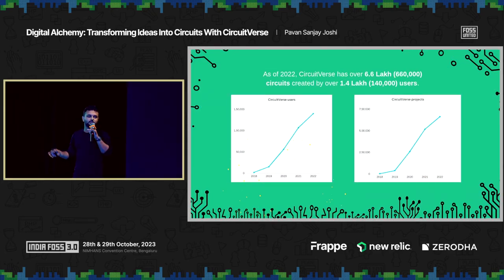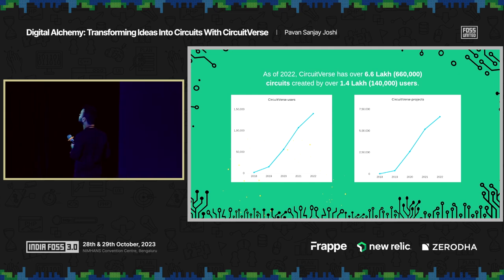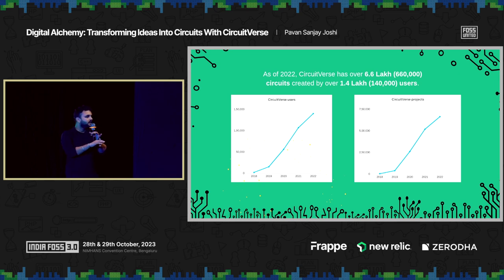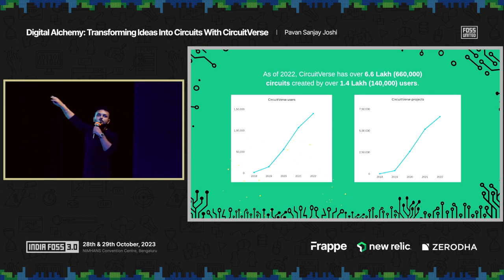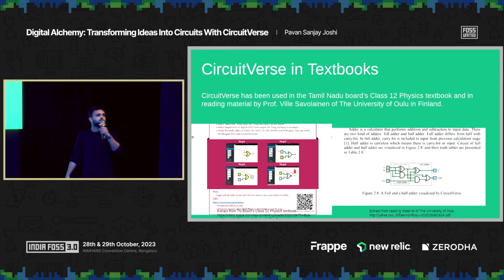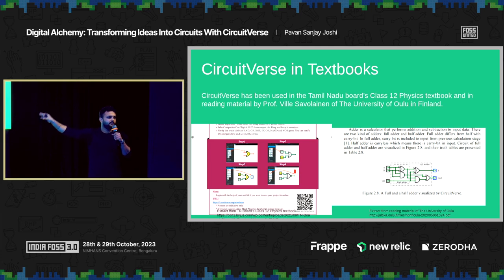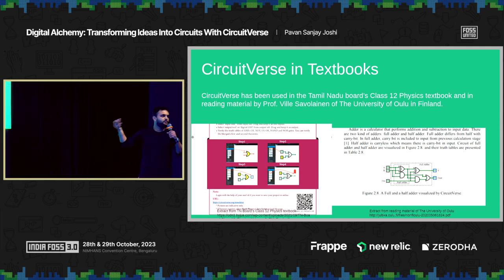Whatever you saw was just 0.1% of CircuitVerse. In numbers, there are almost 660,000 circuits built as of 2022 for 1.4 lakh users. As an open source software that doesn't take a single penny from you, those numbers are huge. As of 2023, we have more than 2 lakh users and the number of circuit projects is crossing the upper bound. CircuitVerse was also used in textbooks — the Tamil Nadu Boards Class 12 physics textbook creates circuits on CircuitVerse and prints them in the state board's textbook. Even foreign universities like the University of Finland and University of Oulu use CircuitVerse and print circuits in their reading materials.